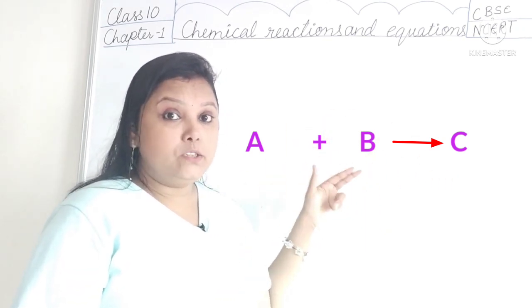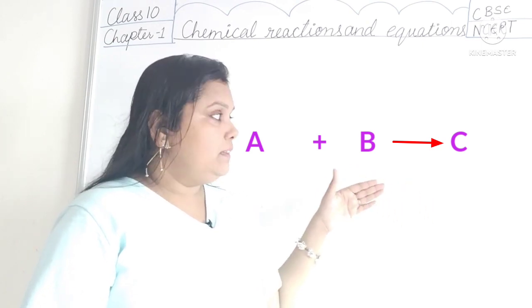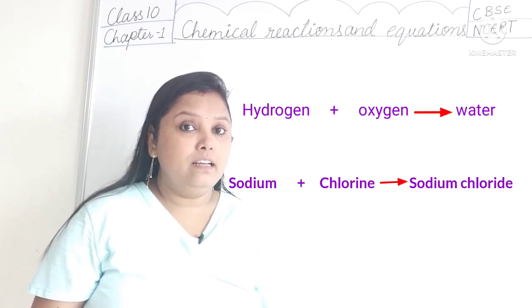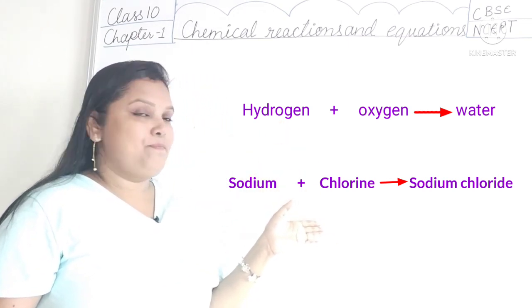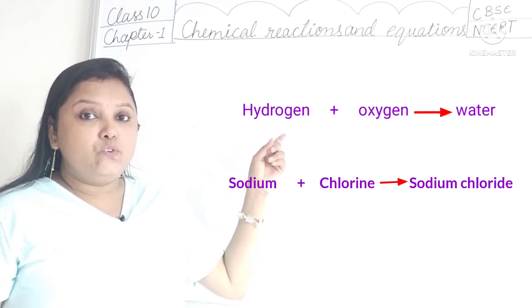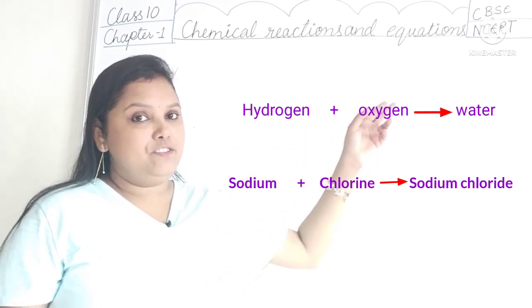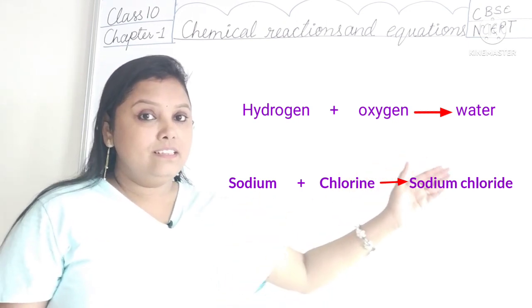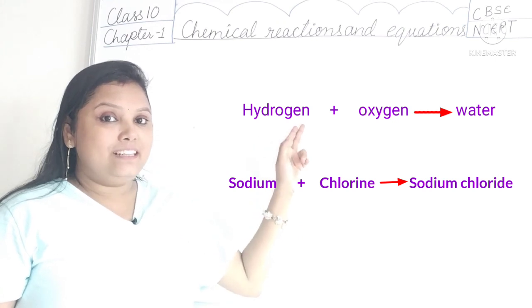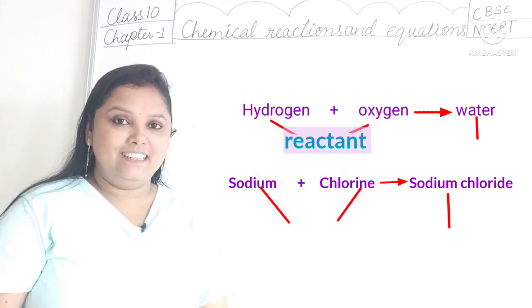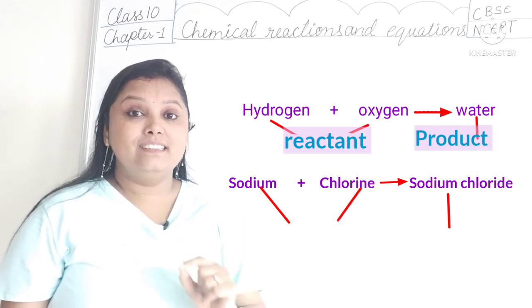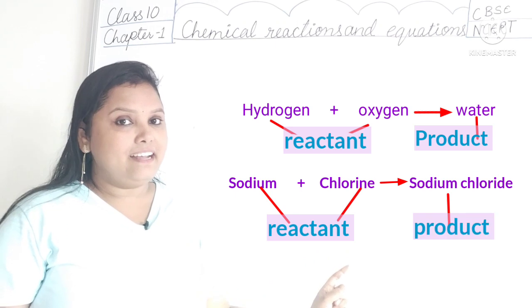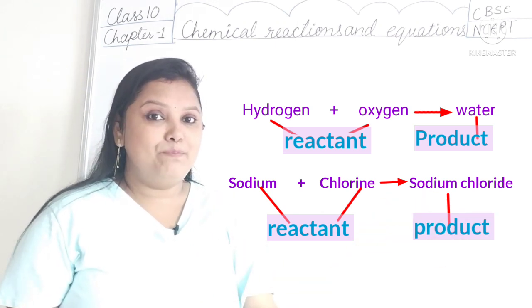Now can you identify the reactants and the products in these equations? The first one is hydrogen plus oxygen gives water, and the second one is sodium plus chlorine gives sodium chloride. Here hydrogen and oxygen are the reactants and water is the product. Here sodium and chlorine are the reactants and sodium chloride is the product.